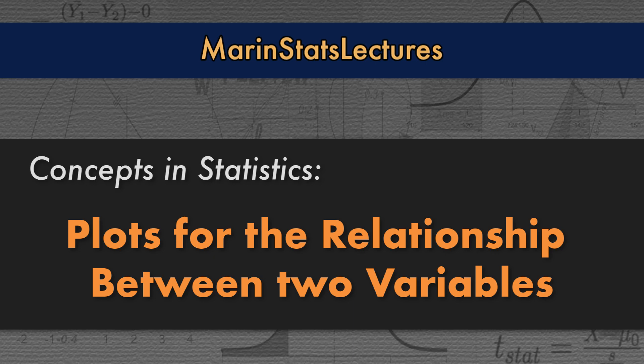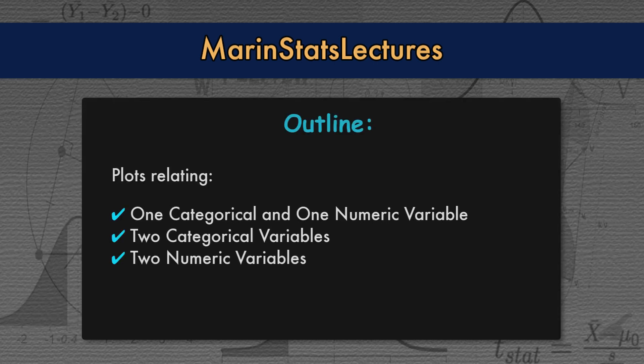We're going to have a little overview of different plots we can make for describing the relationship between two variables: one categorical and one numeric variable, two categorical variables, and then two numeric variables.